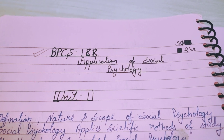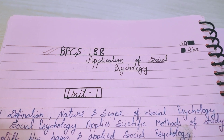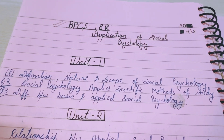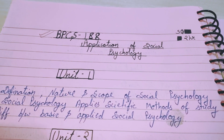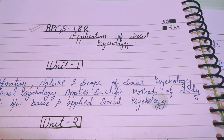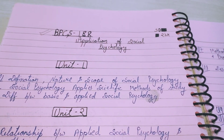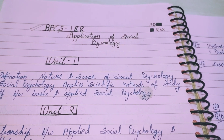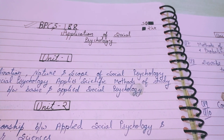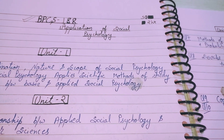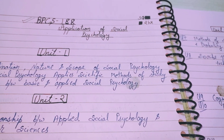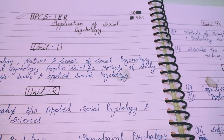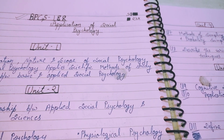Hello guys, welcome to my channel Study and Lifestyle. Today we have BPCS 188 Application of Social Psychology. This paper is 50 marks with a duration of 2 hours. The questions will be 10-10 marks each, and short notes will be 5-5 marks. You have to write definitions at least one page for 5 marks.